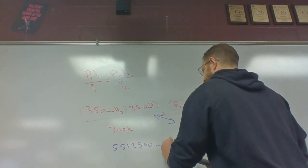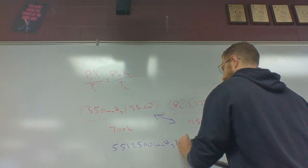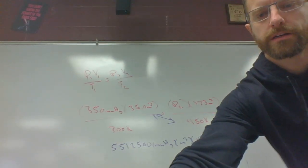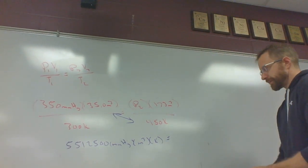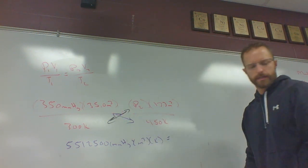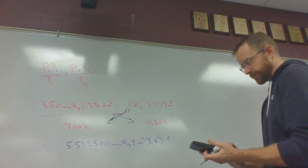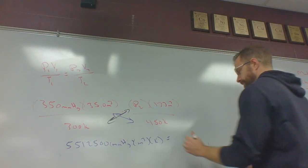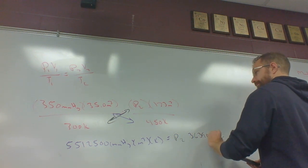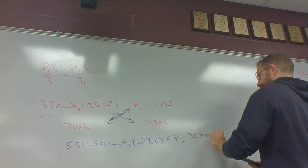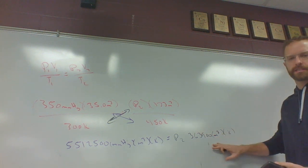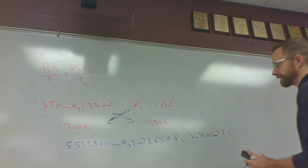We're going to cross-multiply and divide. I want to get P2 by itself, so I'm going to multiply these two sides together. That's going to be 350 times 35 times 450, which gives us 5,512,500, a whole bunch of digits there. Units are really weird: millimeters of mercury, meters cubed, Kelvin, which seems really weird, but that's what the units are. We'll shift over this way a little bit. They'll cancel out to get what we need. Then the other direction, I'll try and do that in another color so we can tell what's what, is going to be 300 times 123.